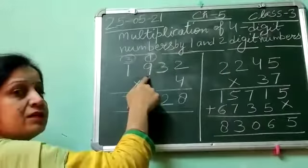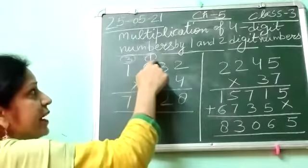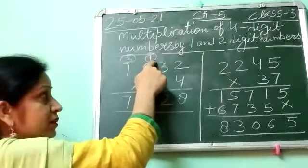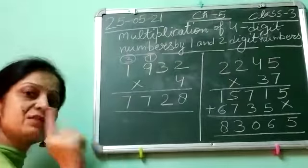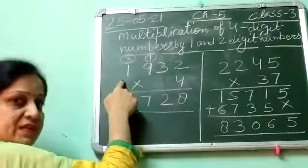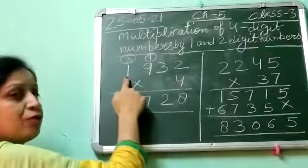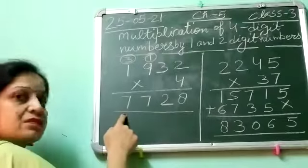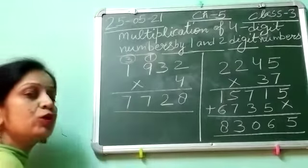Now 4 times 9 is 36, and this 1 you have to add. 36 plus 1 is 37. Write 7 here, 3 carry at thousands place. Then 4 times 1 is 4 plus 3 is 7. In this way you have to do this sum.